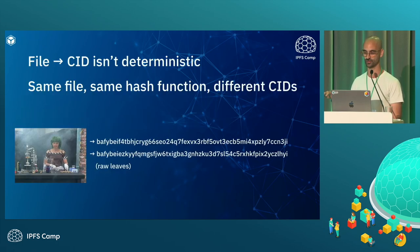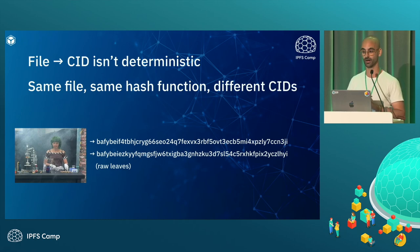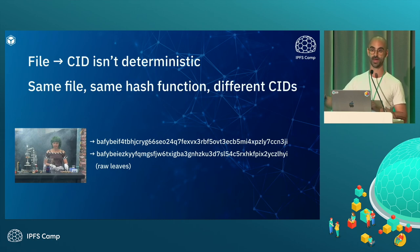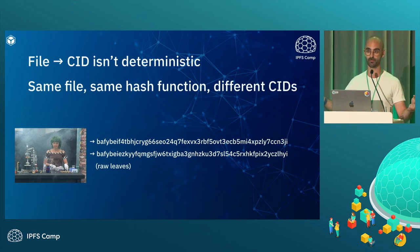The first challenge is that going from file to CID isn't deterministic — there are good reasons for this. IPFS embraces optionality as part of its philosophy, but there's an inherent cost: if you have an image, you might end up with different CIDs. Kubo now has a feature called profiles that lets you change the defaults for how files are merkleized when added to IPFS. Iroh took an interesting approach by just choosing a set of defaults — the tyranny of defaults ensures people don't face these challenges. But if you just have a file, you also need the metadata that is in the DAG that makes up that CID.